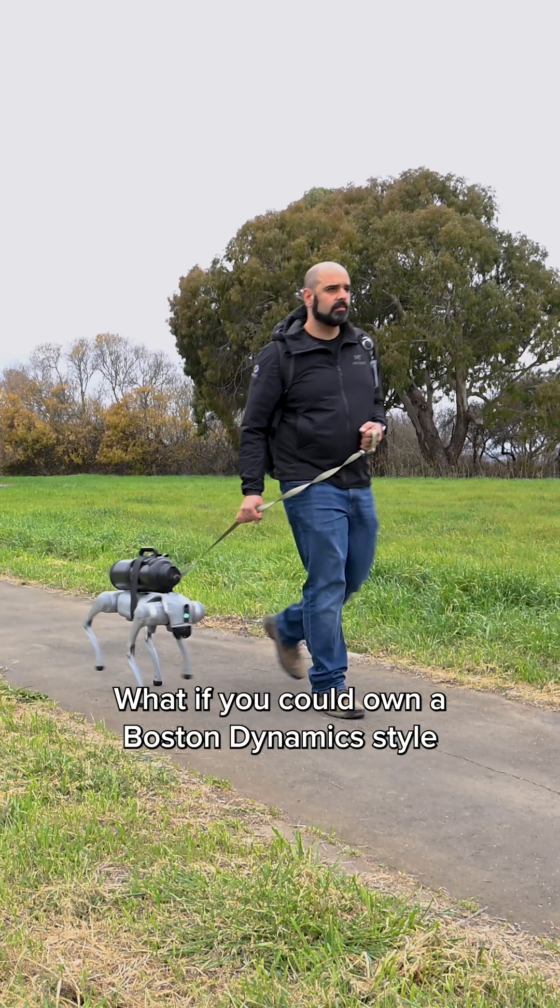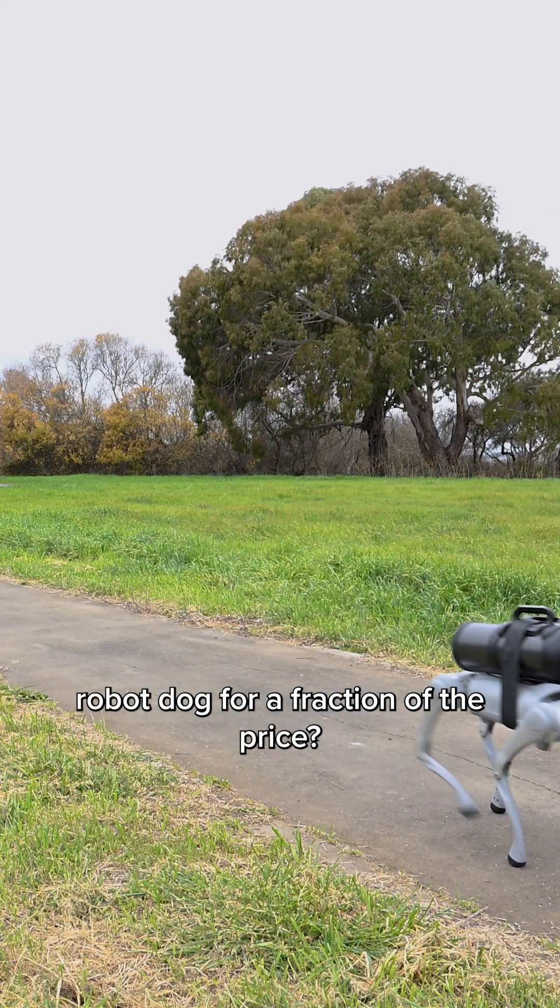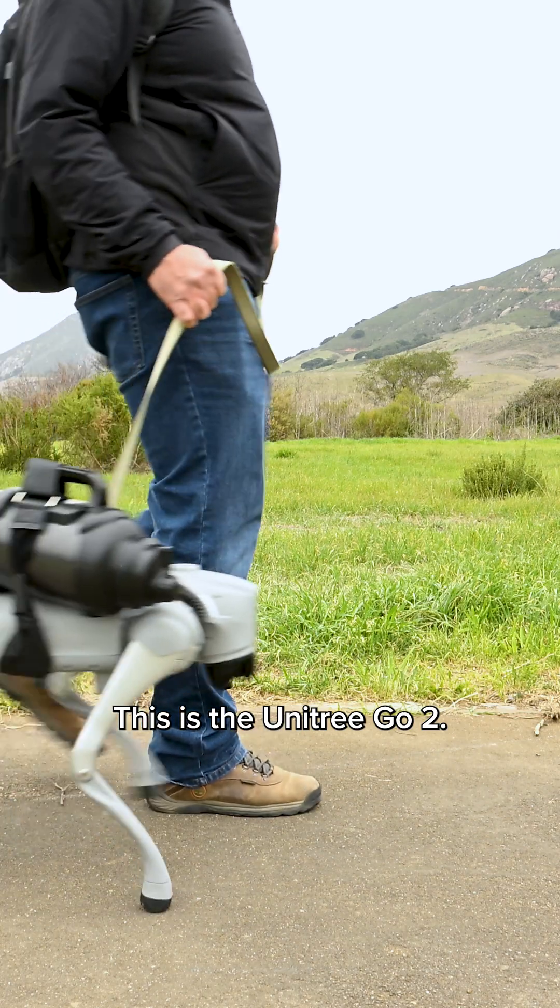What if you could own a Boston Dynamics style robot dog for a fraction of the price? This is the Unitree Go 2.